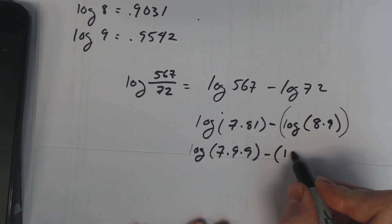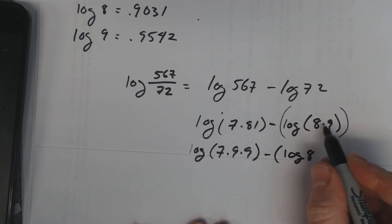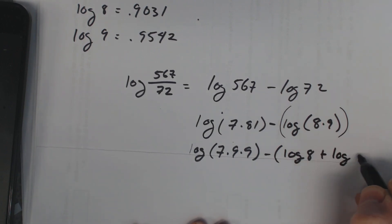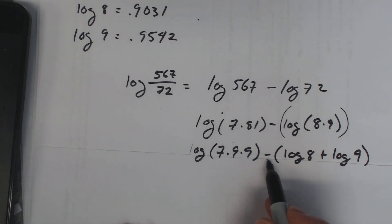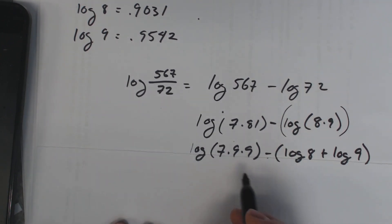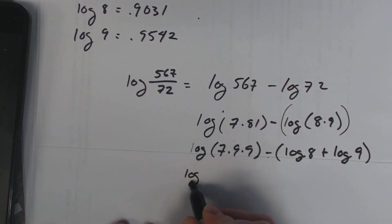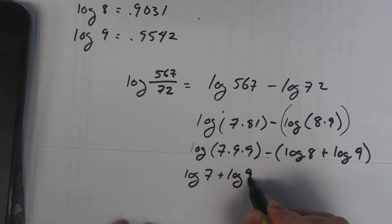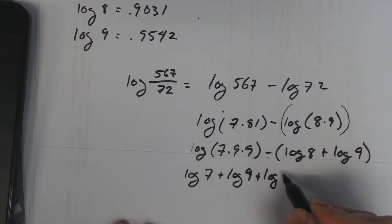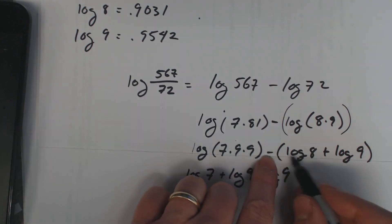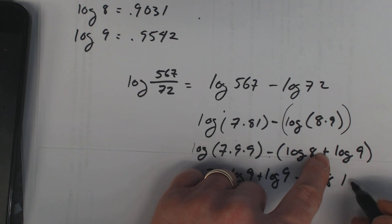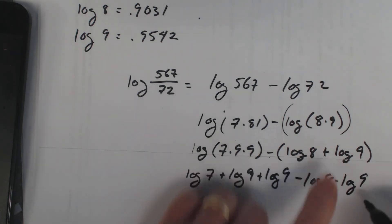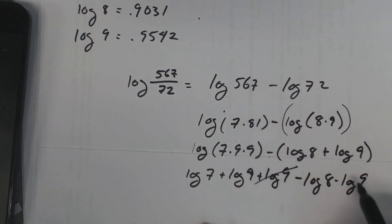Now I'm subtracting this whole thing so let's make sure our signs are good. That's log 8 plus log 9, and there's a minus out front. So we have log 7 plus log 9 plus log 9 minus log 8 minus log 9, and that log 9 will cancel with that negative log 9.